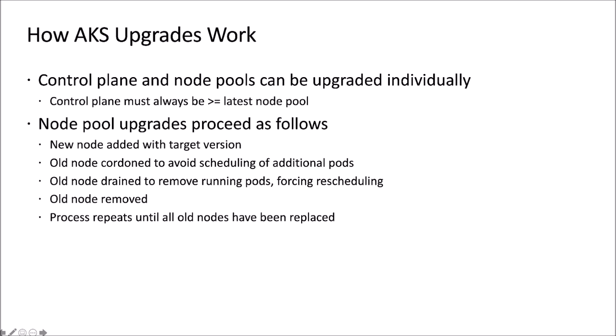Node pool upgrades are the most interesting part, and that's where pod disruption budgets add value. The process works by adding a new node with the target version — for example, moving from 1.16 to 1.17, the new node will be based on 1.17. Then one of the older nodes undergoes a cordon and drain operation, draining existing workloads off and moving them elsewhere in the node pool. Once that node is empty, it's removed, a new node is added, and this continues until all nodes have been replaced with ones running the new version.